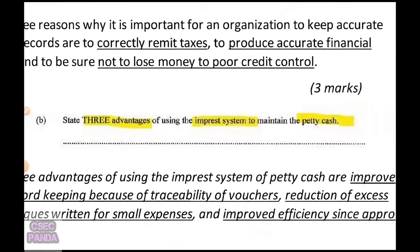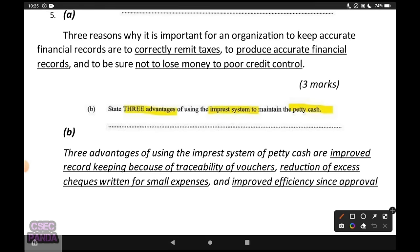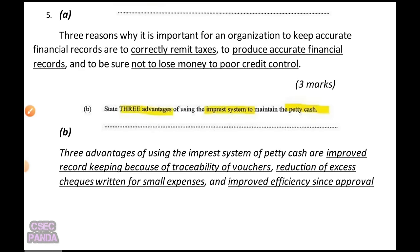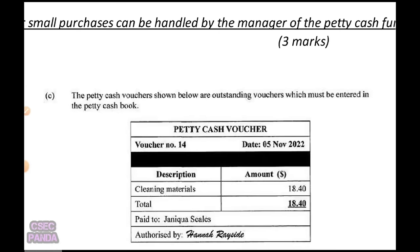State three advantages of using the imprest system to maintain petty cash. Honestly, I'm not sure what they mean by asking this, since the imprest system is essentially the only petty cash system discussed. So I just gave three benefits of having petty cash at all: improved record keeping through traceable vouchers; reduction of excess checks written for small expenses; and improved efficiency since approval for small purchases can be handled by the petty cash fund manager rather than the full accounts department.